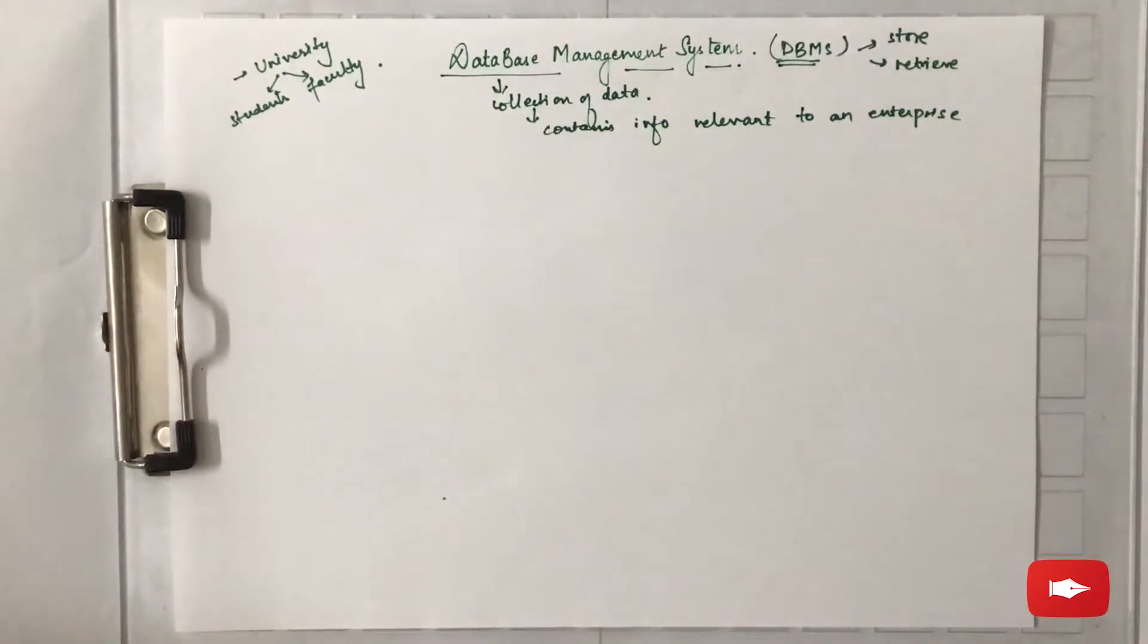The information is stored in the same format and the information is also correlated. So there are records and tables made in tabular form where information is stored. So this is DBMS.